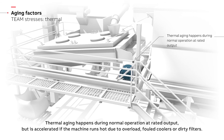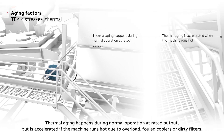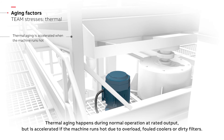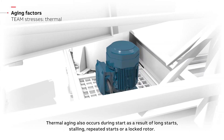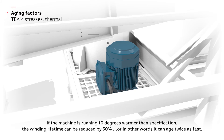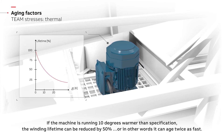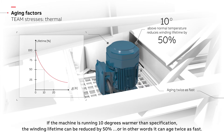Thermal aging happens during normal operation at rated output, but is accelerated if the machine runs hot due to overload, foul coolers, or dirty filters. Thermal aging also occurs during start as a result of long starts, stalling, repeated starts, or a locked rotor. If the machine is running 10 degrees warmer than specification, the winding lifetime can be reduced by 50% — in other words, it can age twice as fast.